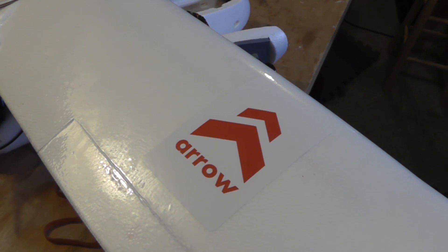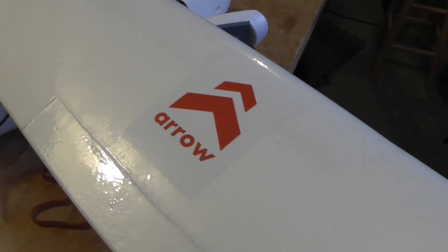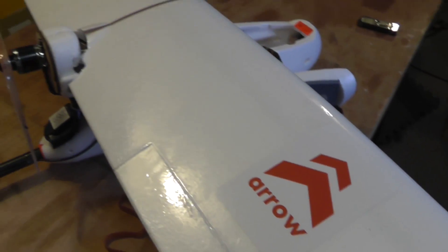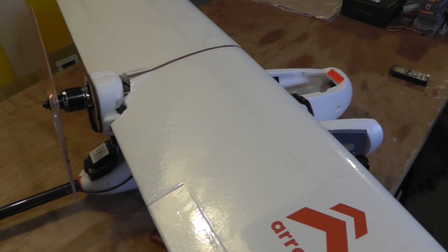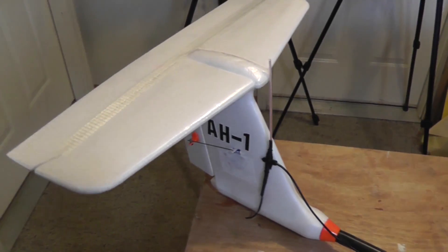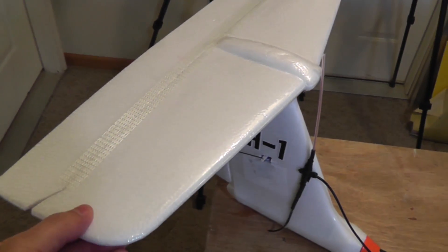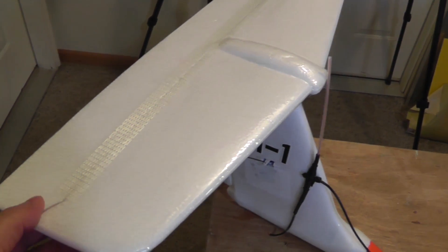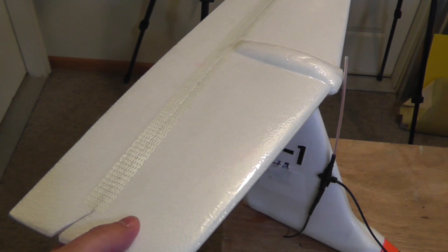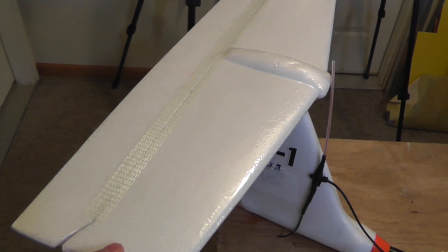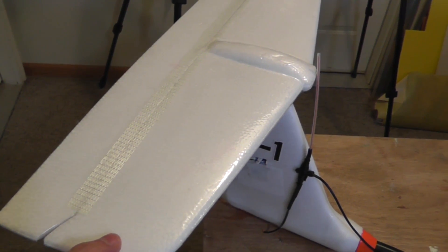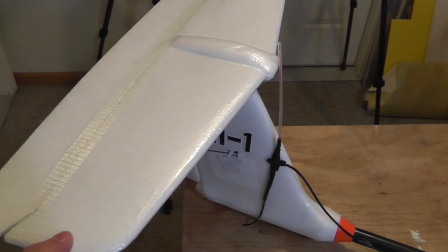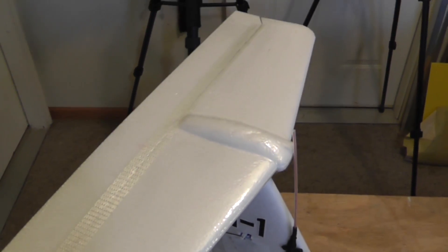So I laminate them with a 3mm laminate, and that creates an outer shell that adds tremendously to the strength and stiffness of the wing. And of course, it makes it much less liable to get dinged up during storage and transport. And the same thing applies to the horizontal stabilizer. It's also, without any reinforcement, a little bit too prone to flexing during flight.